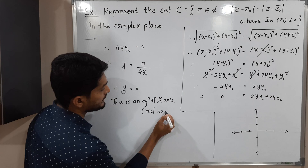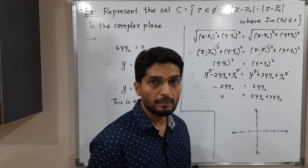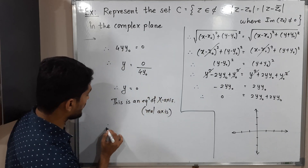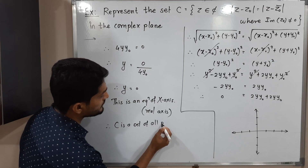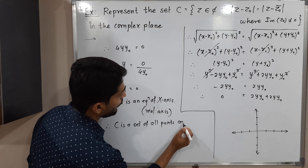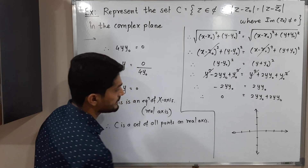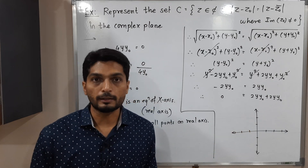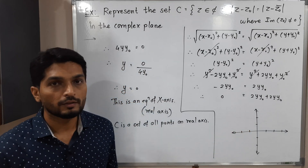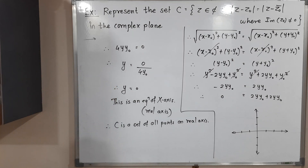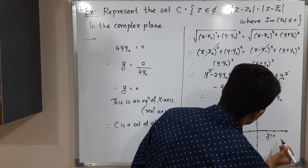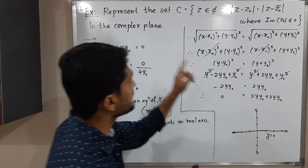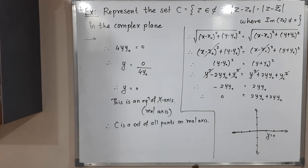The equation y = 0 is the equation of the x-axis, or more precisely the real axis, since in the complex plane we have a real axis and an imaginary axis. Therefore, C is the set of all points on the real axis — that is, C contains all real numbers only. This is the geometric representation of the given set C in the complex plane.